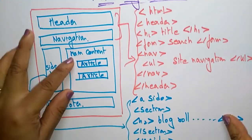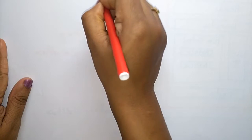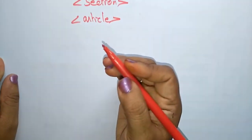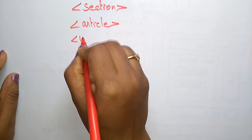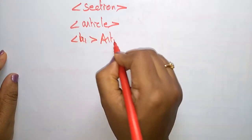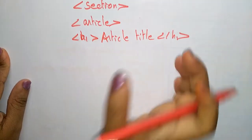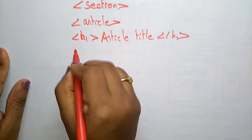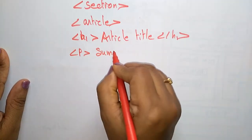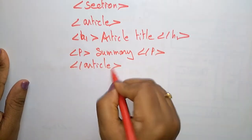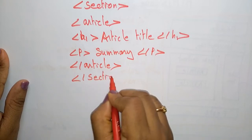For the main content, use the section tag. Inside the section, write an article tag. Within the article, use an h1 tag for the article title — the title appears in a large font. Then add a paragraph tag for the summary content. Close the paragraph tag, close the article tag, and close the section tag.